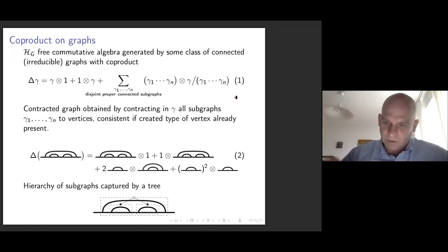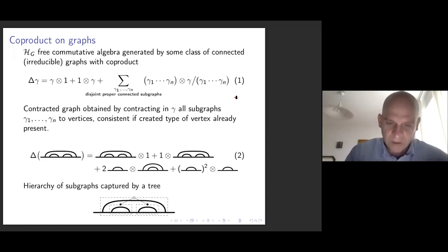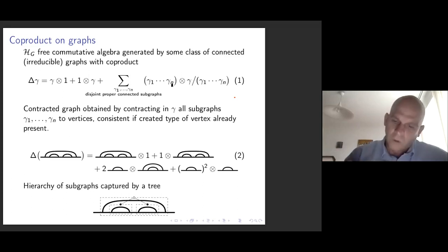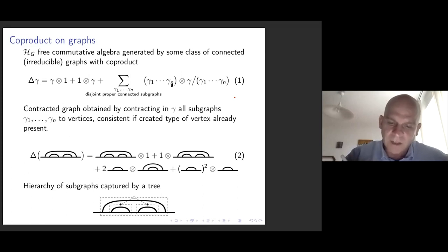So this coproduct: the connected subgraphs have been extracted from the graph gamma on one side, and contracted to single vertices on the other side. Of course, for that to be consistent, if you contract a graph with a certain number of external legs — say four external legs — then you contract it to a single vertex, which means that inside your theory you must have the four-valent vertex.